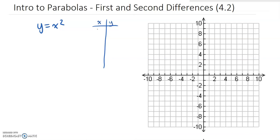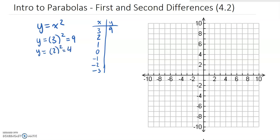I'm going to list the x values and the y values, starting the x values at positive 3, going down to 0, and then continuing down all the way to negative 3. If we put 3 into this equation, 3 squared gives us 9. So when x is 3, y is 9. If we put 2 squared in, it gives us 4. If we put 1 squared in, that gives us 1. If we put 0 squared in, that gives us 0.